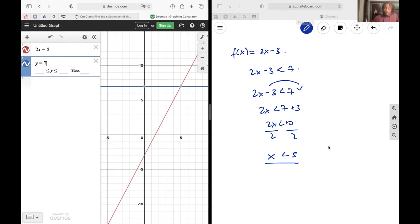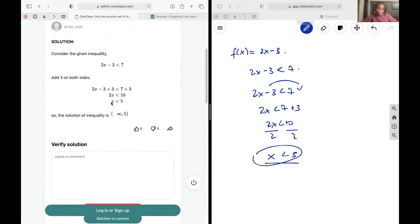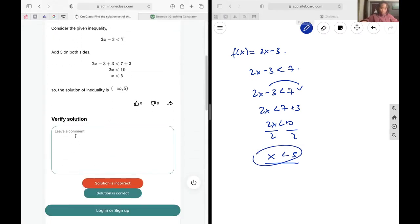The solution set is going to be all values of x that are less than 5. I'm just going to go from negative infinity to positive 5, not inclusive of the 5. Negative infinity you can't include it.